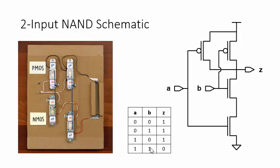When the two inputs have different values, one NMOS transistor is shut off, cutting off the ground connection, and one PMOS transistor is turned on, forcing the output to one.